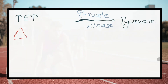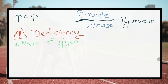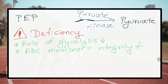What happens in pyruvate kinase deficiency? The rate of glycolysis is severely decreased. Since red blood cells completely depend on glycolysis for ATP production, the reduced rate of ATP production results in failure to maintain cell membrane integrity, destroying red blood cells and causing hemolytic anemia.